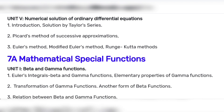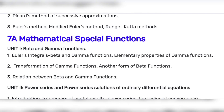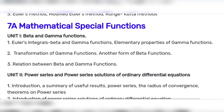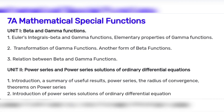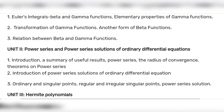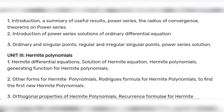7th E: Mathematical Special Functions — Beta and Gamma Functions, Power Series, and Power Series Solution of Ordinary Differential Equations. So 6th E and 7th E are considered the easier option in this group.